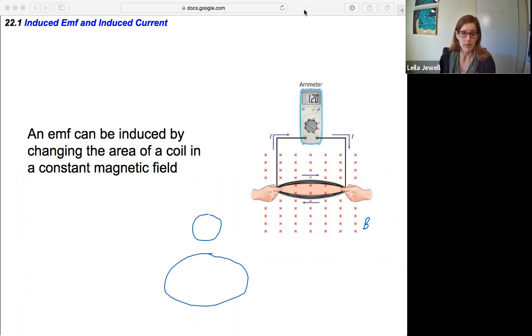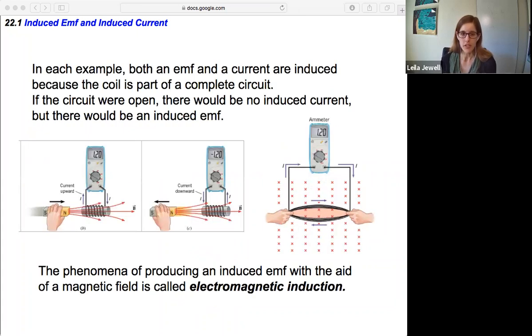A couple of notes here. In both of these examples, both the emf and the current are induced because the coil is part of a complete circuit—the coil is wired through the ammeter and back to the coil. If the circuit was open, that is if we disconnected some part of the circuit, there would be no induced current because we need to have a complete loop for there to be current.